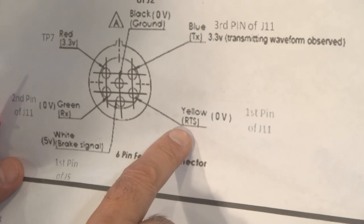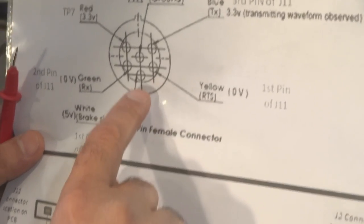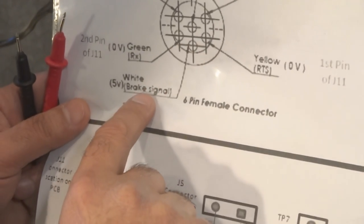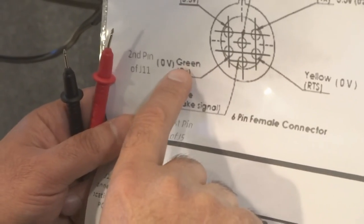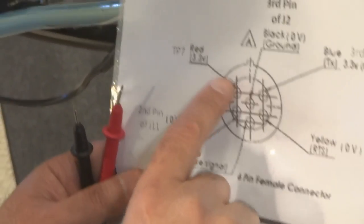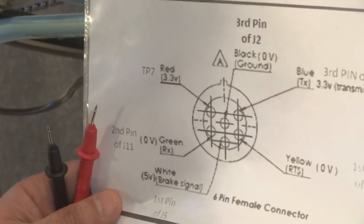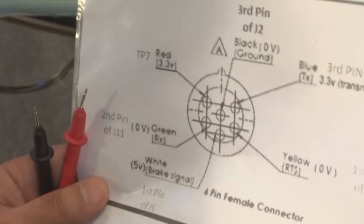So this one is supposed to be 3.3 volt. Then we have got, this is 0 volt on the yellow. This one is 5 volt for the brake signal and then we have got green is 0 and then red is 3.3 volt. So that's how we are going to read it.